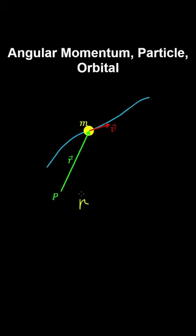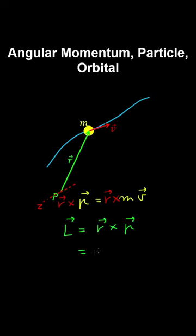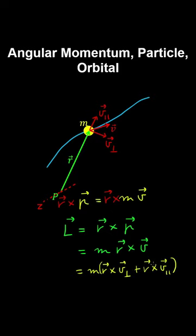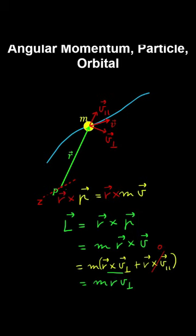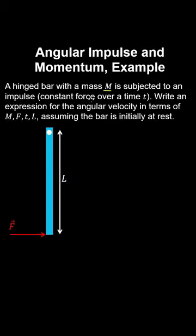The linear momentum of a particle with mass m: defining a vector r from an axis through point P and taking the cross product gives the relationship between angular momentum and linear momentum. In two dimensions, the perpendicular component of the velocity contributes to angular momentum; the magnitude of the cross product is r times v_perpendicular. By the right-hand rule, the angular momentum vector points in or out of the plane. This is known as the orbital angular momentum of the particle about the axis through P.